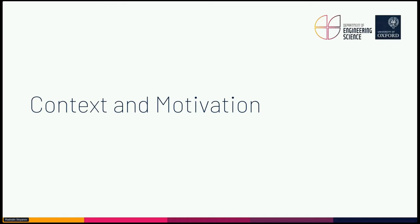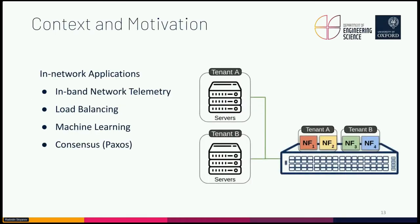With this level of flexibility, developers can offload different applications that traditionally run on CPUs to high-performance network devices. Some applications developed by the network community include in-band network telemetry, which collects state information and measurements directly in the data plane at each hop providing better network visibility; load balancing, which can replace hundreds of software load balancers with a single programmable switch; and machine learning applications, consensus protocols, and many others.